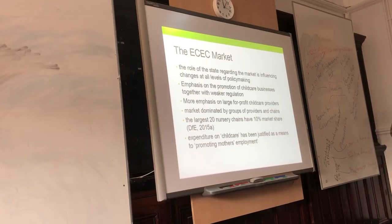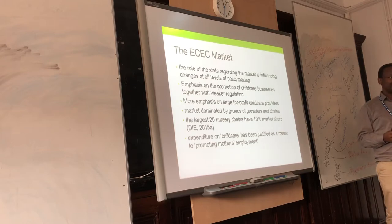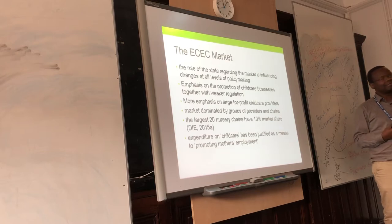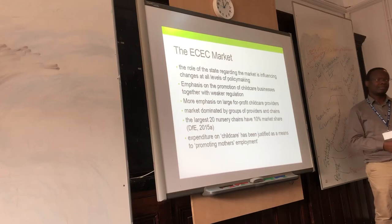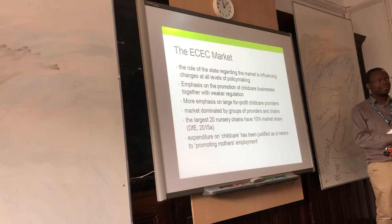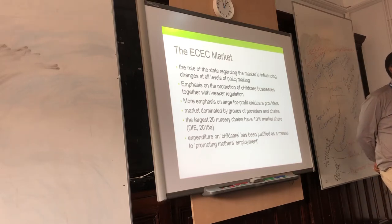Expenditure on childcare has been justified as a means to promoting mothers' employment. The government was saying let's make sure mothers can go to work, so let's give them the childcare they need. They've given up to 15 free hours, the disadvantaged hours, and 30 hours. It hasn't worked very well so far. The 30 hours means that private nurseries can't afford to sustain themselves — schools get higher funding than private nurseries.